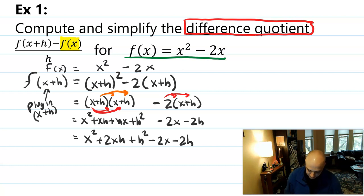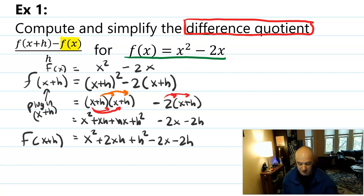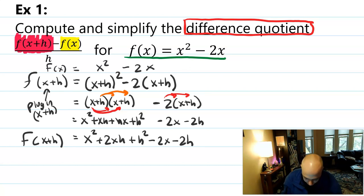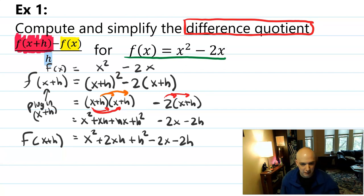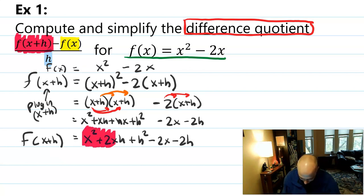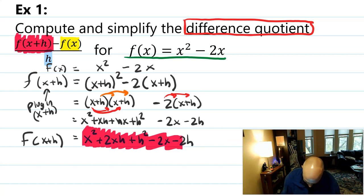Combining all like terms, we get x squared plus 2xh plus h squared minus 2x minus 2h. And that whole thing is just the f(x+h) part of the difference quotient — really just this piece. I've computed this piece. I know what f(x) is, and h is just a variable letter. So I'm now prepared to plug into the difference quotient formula.